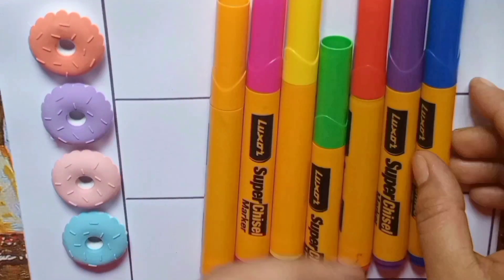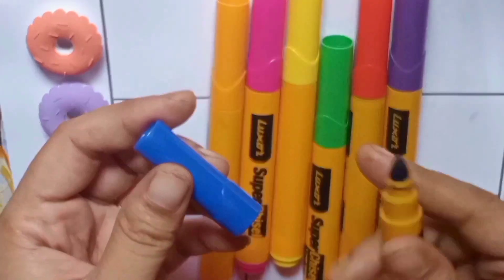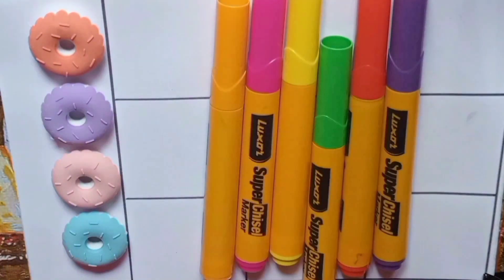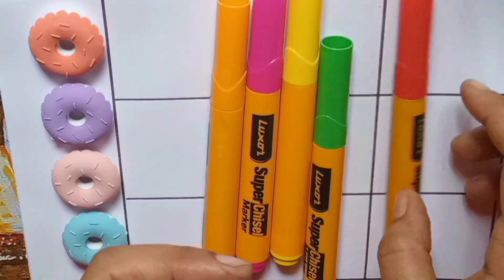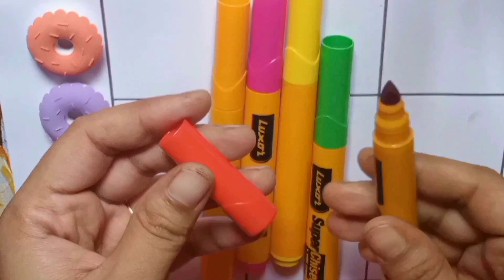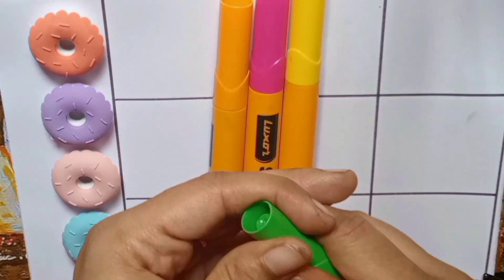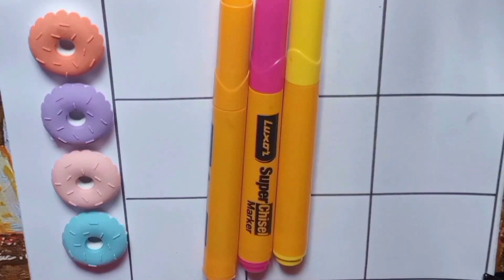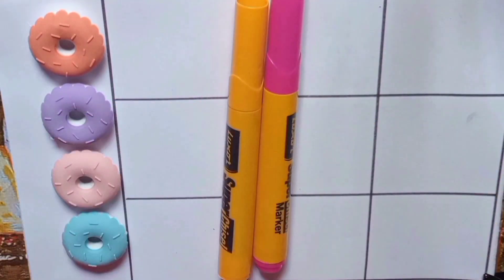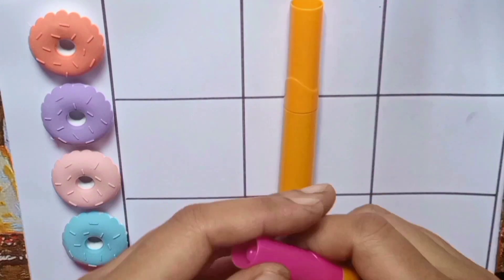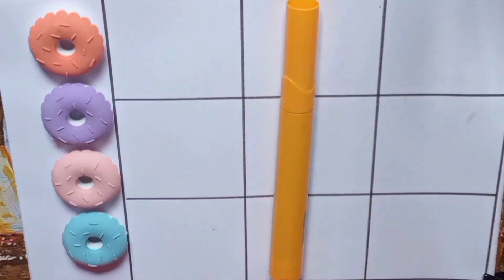Let's learn the colors: blue color, purple color, red color, green color, yellow color, pink color, and the last one is orange color.